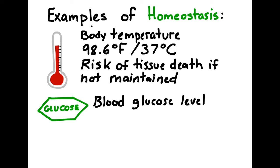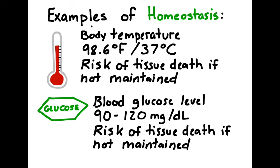If the problem is not fixed, there is a distinct risk of tissue or even organism death. Blood glucose level is also a common example of homeostasis, although it may be one that you are less familiar with. Your body needs sugar in order to run the process of cellular respiration and provide energy for your cells. There is an ideal amount of sugar to have in one's blood, which is about 90 to 120 milligrams per deciliter.